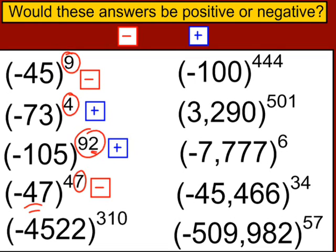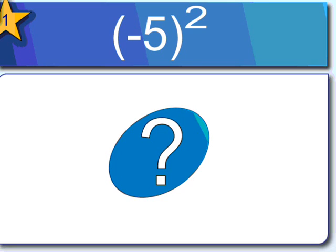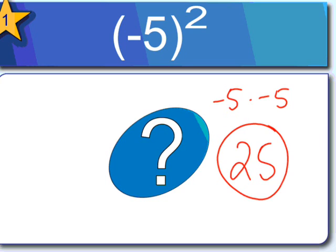In the last example, if you did this number to the 310th power — because that's an even number — you would end up with a positive result. Let's move on to some simpler examples. Negative 5 to the second power means negative 5 times negative 5, which gives you positive 25. We have an even exponent, so we get a positive answer.